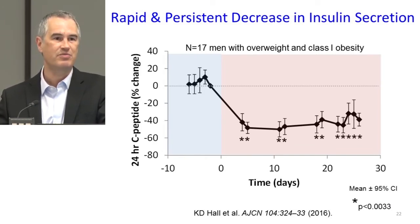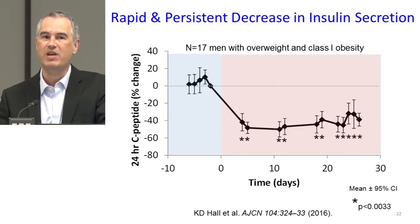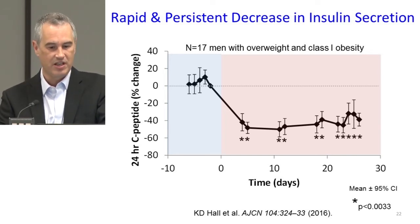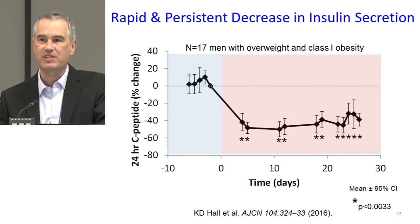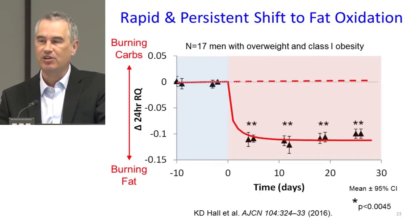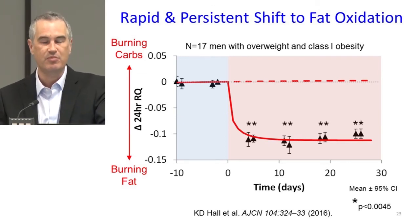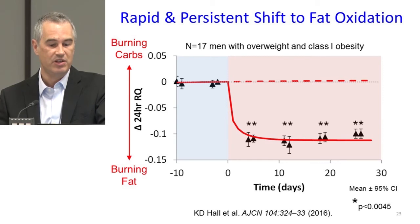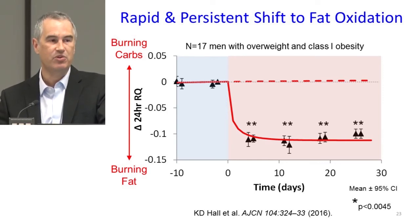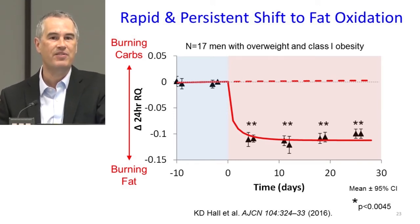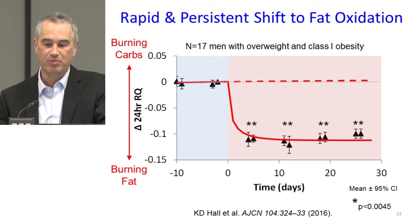So what happened? 24-hour C-peptide — the insulin secretion rate — crashed to 50% of what it was before, clearly introducing a major change in insulin secretion. The respiratory quotient dropped substantially, and the mathematical model simulations of these particular subjects given their baseline conditions matched well. In the solid curves, the respiratory quotient goes down and stays down — it doesn't take another nose dive as you might hypothesize if fat adaptation had kicked in later — and the model predicted that.